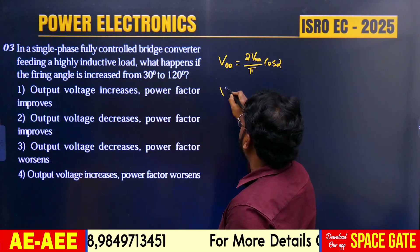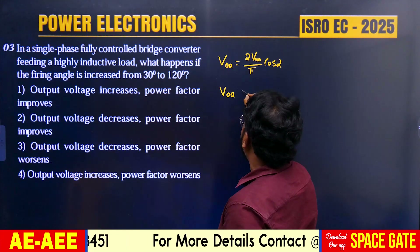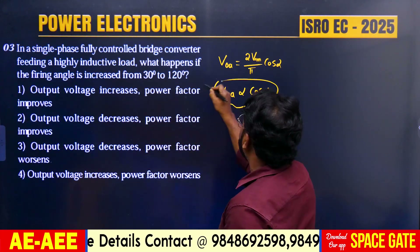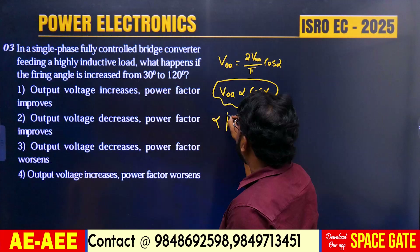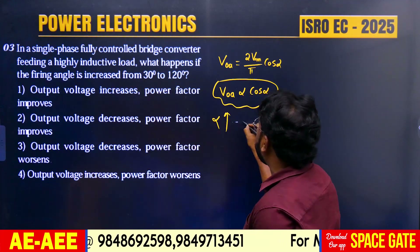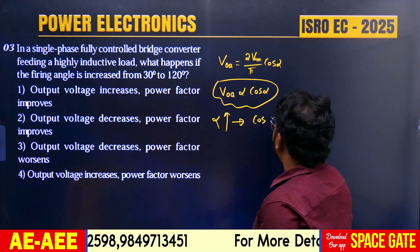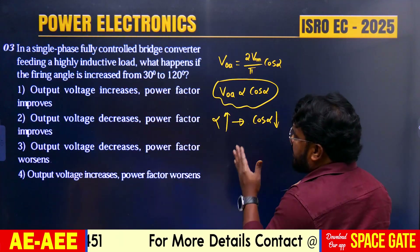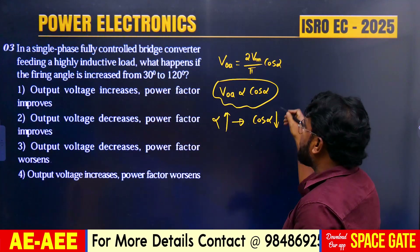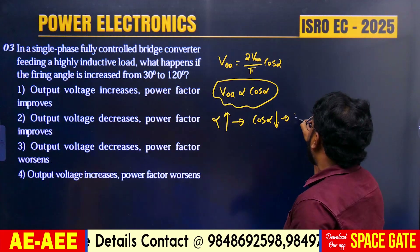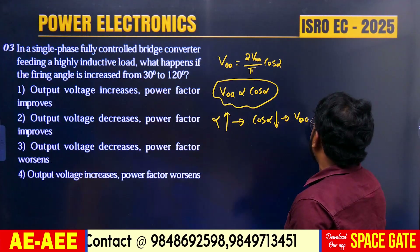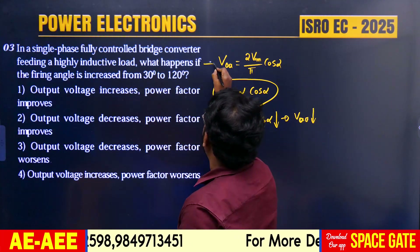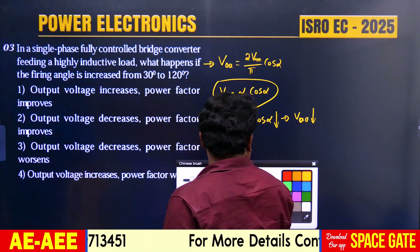The average output voltage is V0_avg = (2Vm/π) cos α. From this equation, V0_avg is directly proportional to cos α. As alpha increases from 30° to 120°, cos α decreases. Therefore, V0_average decreases.